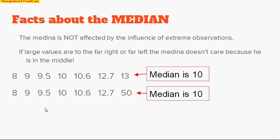A couple facts about the median. The median is not affected by the influence of extreme observations. If large values are to the far right or the far left, the median doesn't care. Large values don't affect the median.